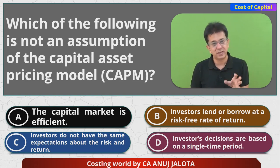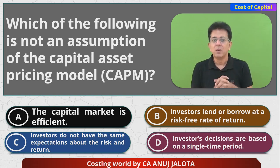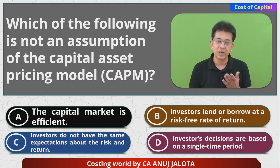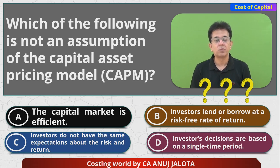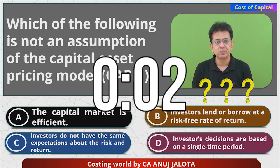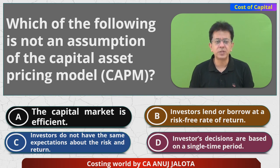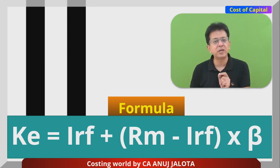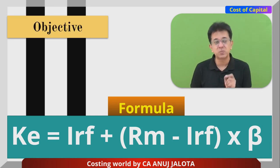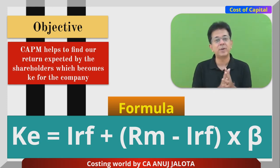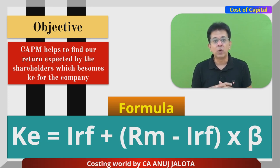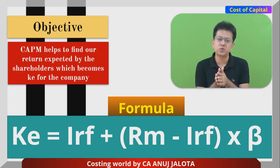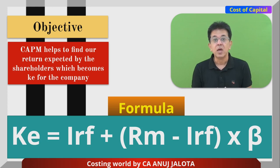Rather than listing all CAPM assumptions, let me explain what the CAPM model is. It was developed by a gentleman called William Sharp. The CAPM formula is: Ke = Irf + (Rm − Irf) × Beta. The objective is to find how much return equity shareholders expect. Whatever shareholders expect, the company must provide — making it the company's cost of equity.